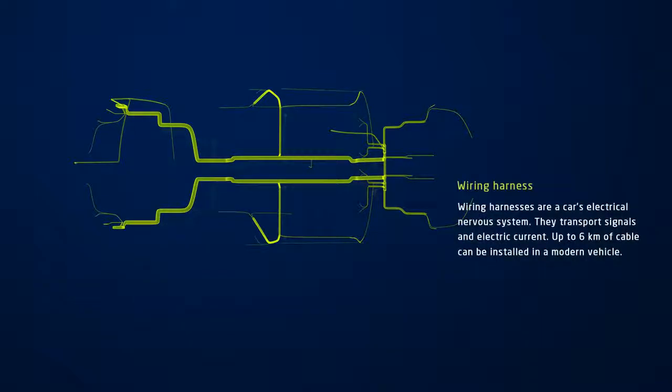In cars, wiring harnesses transport signals and electric current. Up to 6 km of cable can be installed in a modern vehicle.